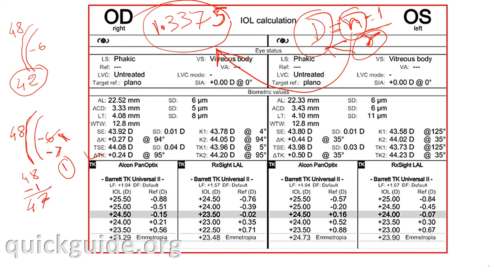Some machines have different keratometry indices, but IOL Master has always used 1.3375 since it was first introduced. You can still use the same keratometry index for IOL Master 700, which means you do not need to change your A-constants for IOL power calculation. So basically, TK is not net corneal power — not anterior minus posterior — but it adjusts for deviations in posterior corneal power from average values and reconciles them with anterior corneal values, so you can use it in any formula. If you have questions, log on to quickkite.org and I will be happy to answer.